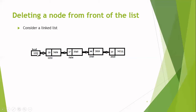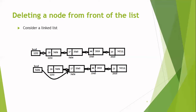The address of the header has to be changed from the address of the first node to the address of the second node. To do this, just access the link part of the first node. The link part of the first node will give you the address of the second node. Hence, change the header address to the address of the first node's link part. This is diagrammatically illustrated in this diagram.